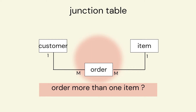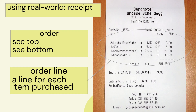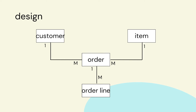What happens if we want to order more than one item? Let's look at a receipt — a real-world object we can use to help with our design. We've got the order details at the beginning and end, common details on any order. In the middle, each line shows an item on the order, so we can see several items per order. We can look at a design where we have another entity called order line.